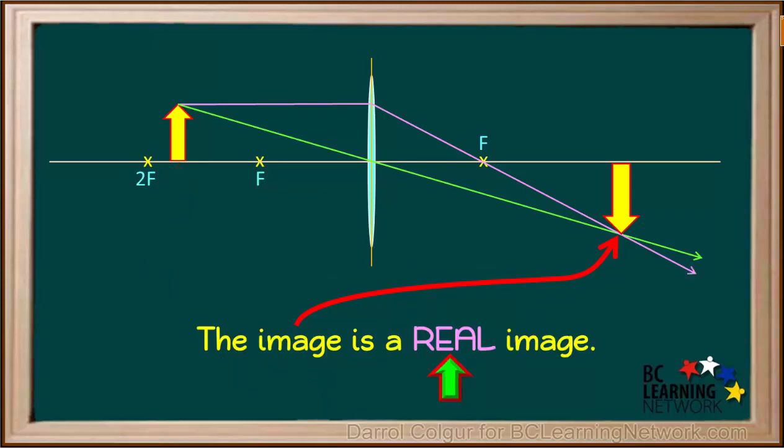And because the image appears where the two rays actually cross each other, this is a real image. If the sensor of a digital camera was located here, the image would be recorded on it.